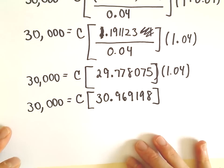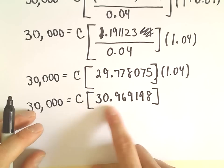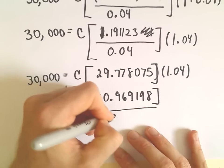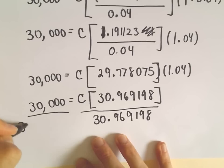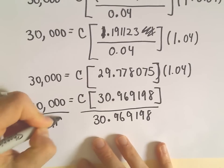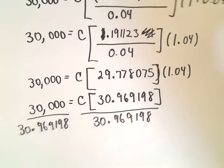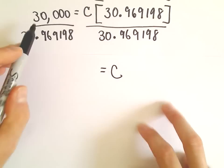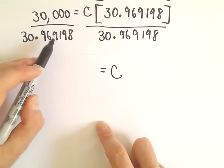Okay, so the last thing I need to do here is simply divide to solve for C. We're multiplying C in this number, so to get C by itself, we'll just divide both sides by 30.969198. So if I do it to the right side, I have to do it to the left side as well. When I simplify this, on the left side, everything will cancel except for the C.